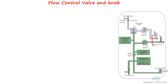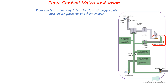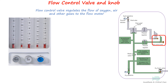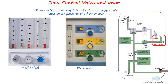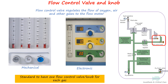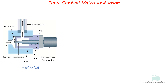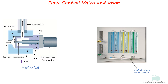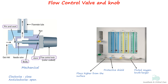The flow control valve regulates the flow of oxygen, air, and other gases to the flow meter or indicators, and can be either mechanical or electronic. Current standard requires one flow control for each gas, adjacent to or identifiable with its flow indicator. The mechanical flow control valve consists of a body, stem, and seat; the stem is connected to the flow control knob. The oxygen flow control knob is larger and fluted compared to others, which are rounded. These knobs are sometimes protected behind a shield to minimize accidental changes in position, and are placed high above the working surface.